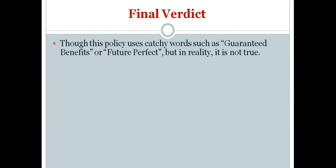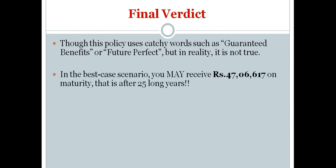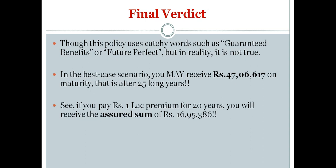So what is the final verdict? Though this policy uses catchy words such as 'guaranteed benefits' or 'Future Perfect', in reality it is not true — you are just receiving what you are paying, even less than that. In the best case scenario, you may or may not receive Rs. 47 lakhs at maturity after 25 long years. If you pay Rs. 1 lakh premium for 20 years, the assured sum is only Rs. 16,95,386 — you are paying 20 lakhs and more and receiving only this much assured.